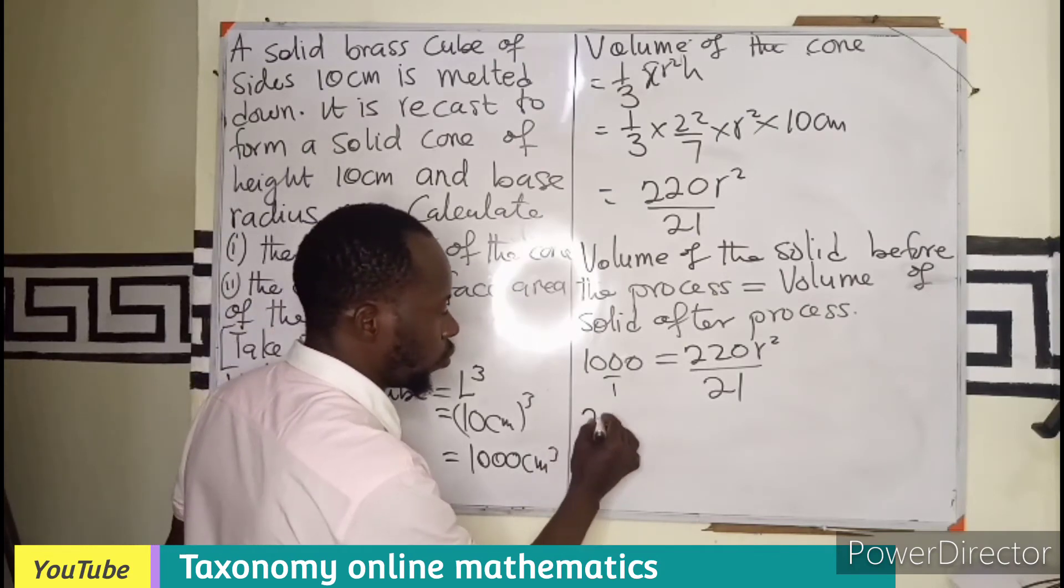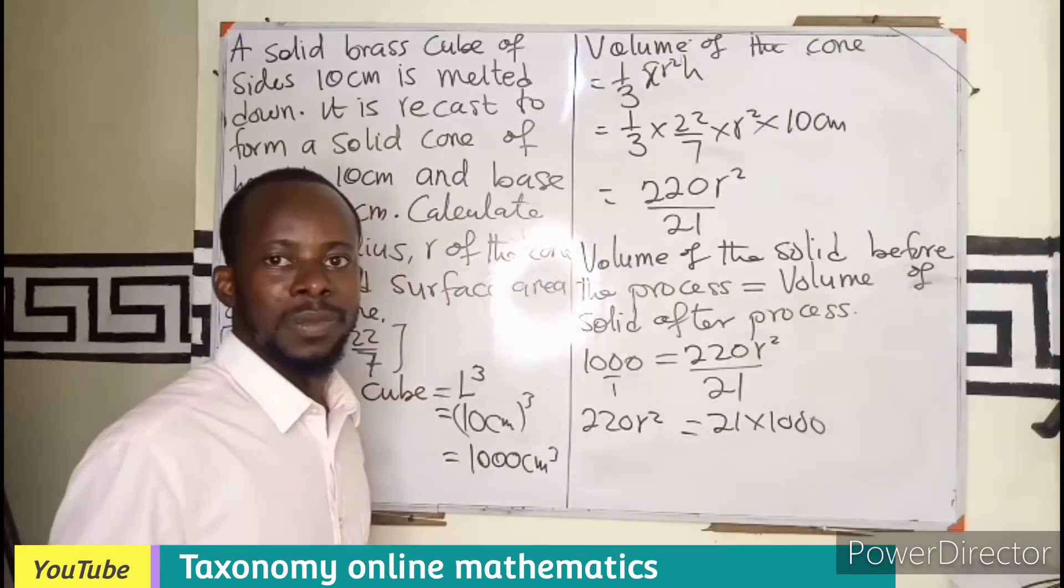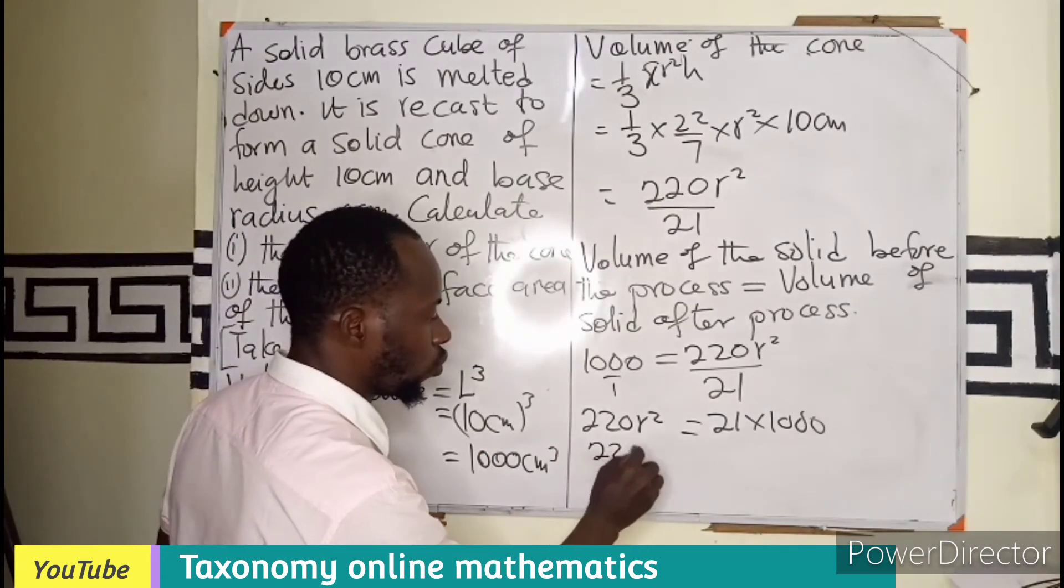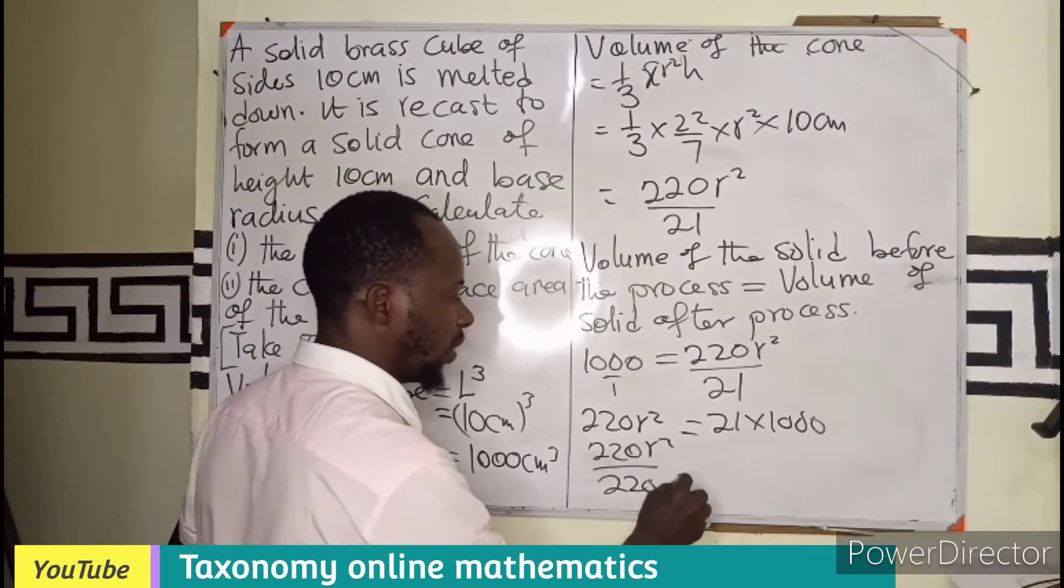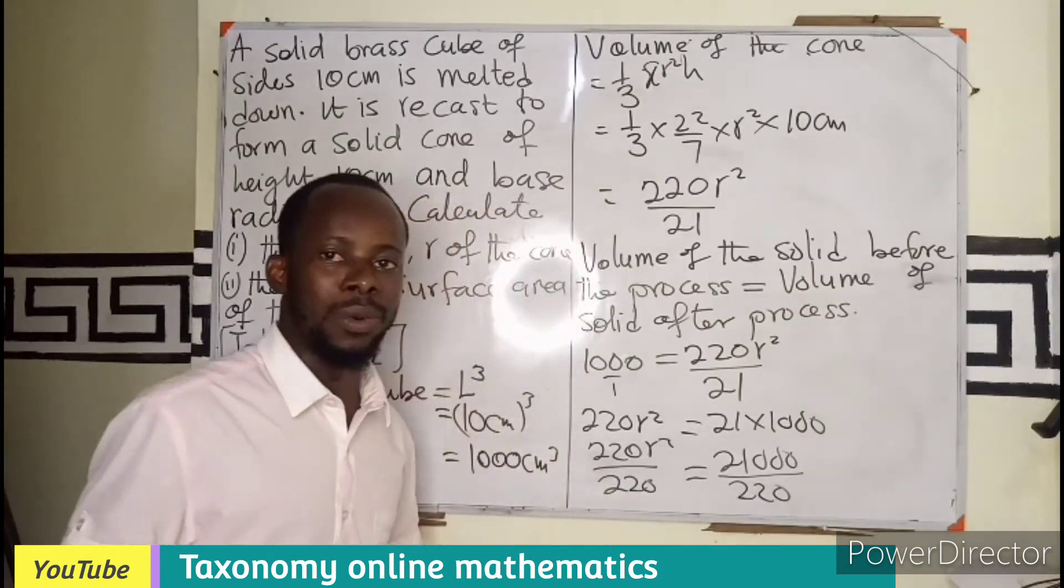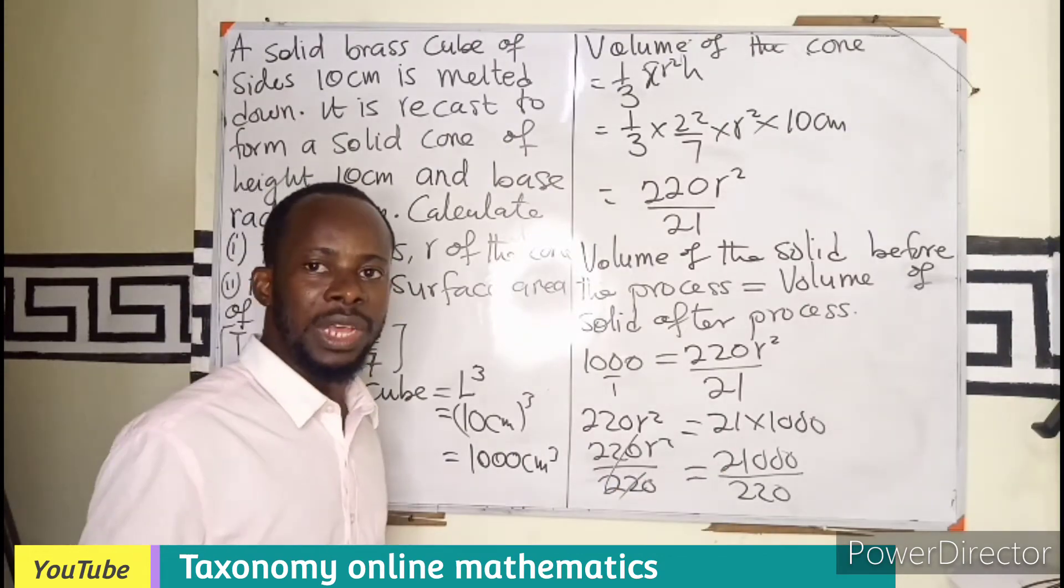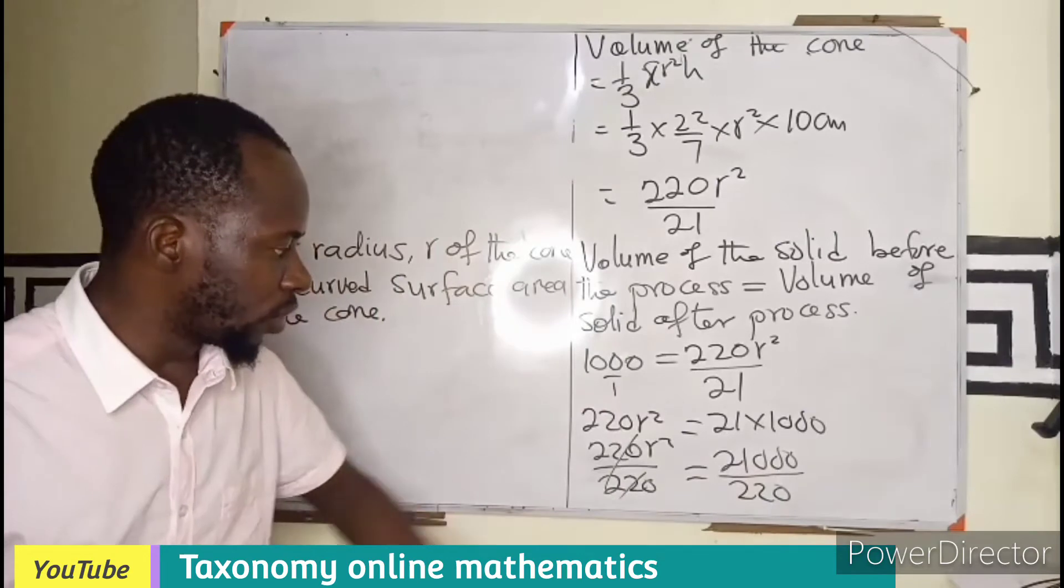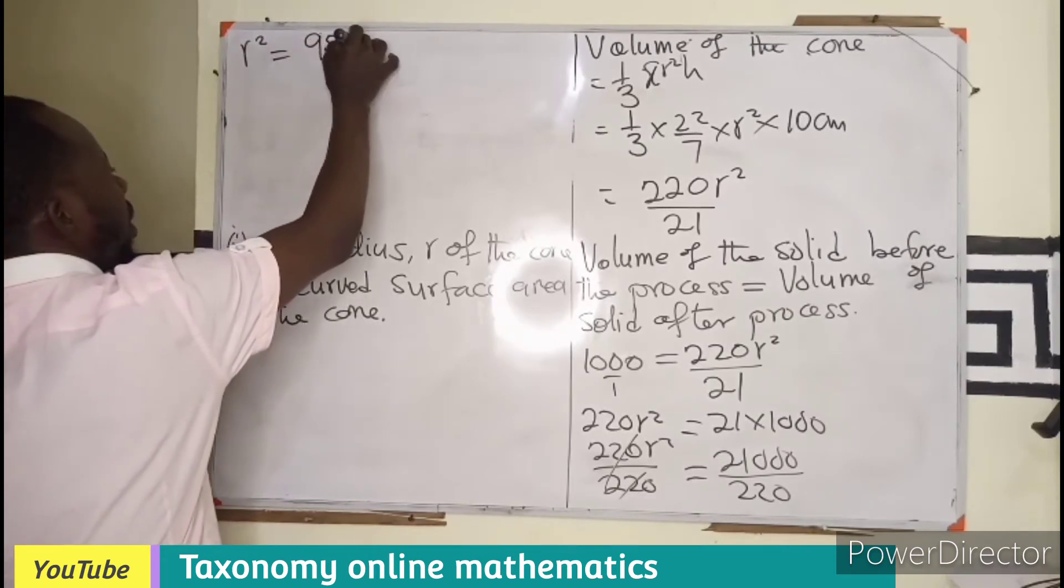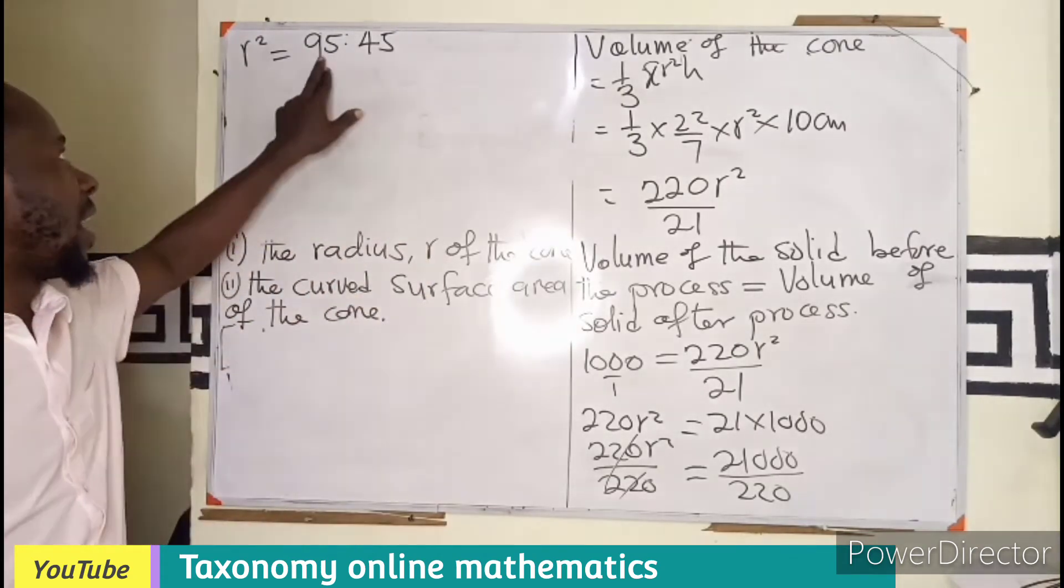So here we can operate this by cross multiplication. And that will give us 220 r square equals to 21 times 1,000. So we are looking for the r square. So we divide by the coefficient. So that would be 220 r square over 220. Then this becomes 21,000 over 220. So right away this will cancel. You will be left with only r square equals to these values. By putting that in the calculator we will have r square equals to 95.45 to two decimal places.